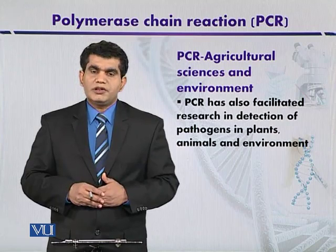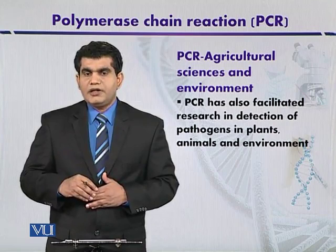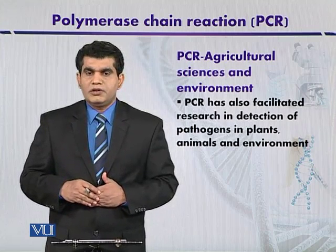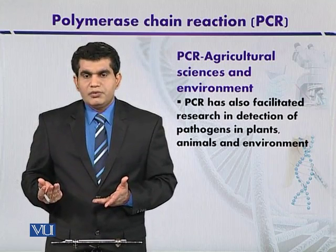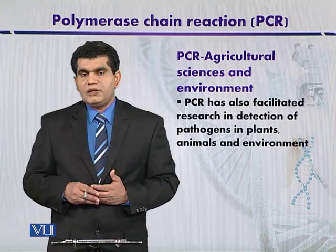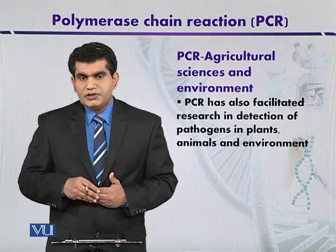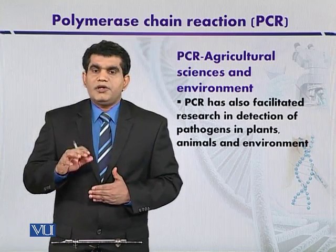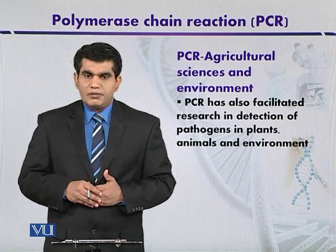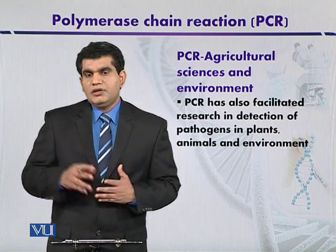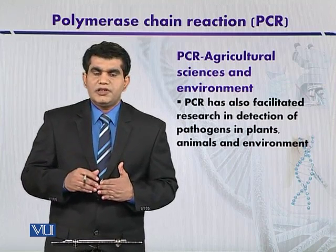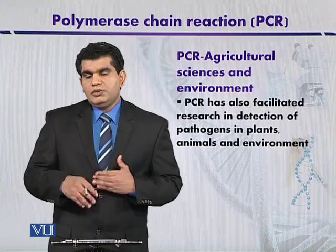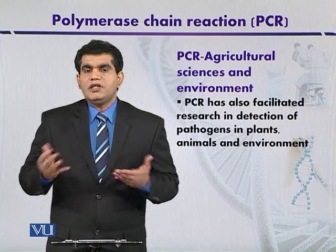Here we can use certain microbes to degrade pollutants — even genetically modified microbes. Just as genetically modified crops can be used, genetically modified microbes can be produced by introducing specific target genes, where PCR provides the specific target gene so that a particular microbe can degrade pollutants in the environment. This technique can be used not only to detect diseases in agriculture or transform organisms, but also to introduce a gene of choice into microbes so they can clean the environment for us.